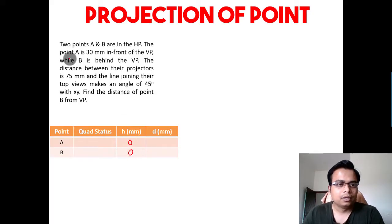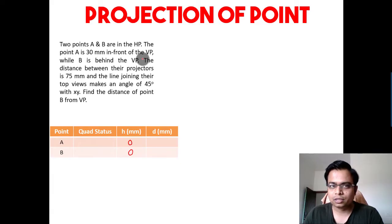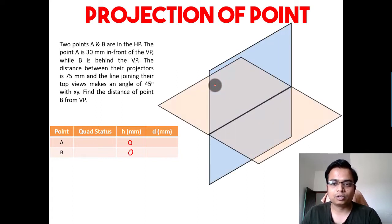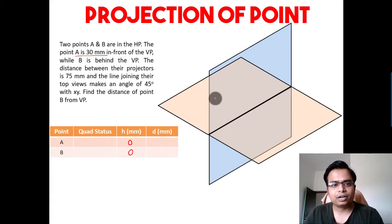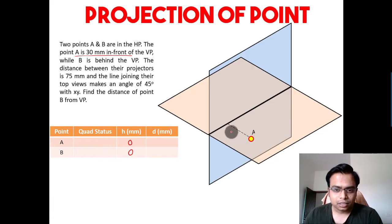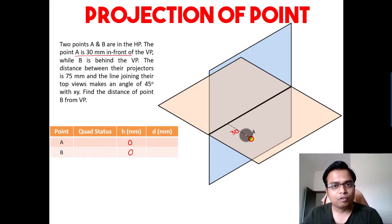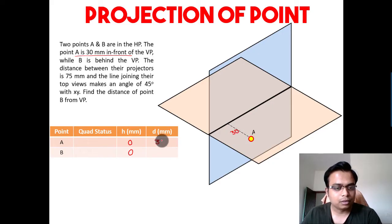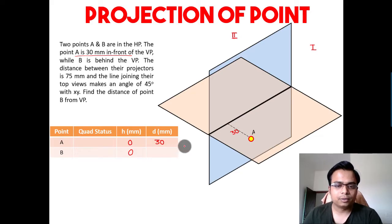Point A is 30mm in front of the VP. Let me make a vertical plane and a horizontal plane. As far as point A is concerned, this distance is 30mm. So point A, apart from being in the HP, is also 30mm in front of the VP — that means the value t has to be 30. This is quadrant 1, that's quadrant 2, quadrant 3, and quadrant 4.